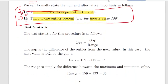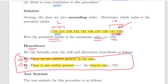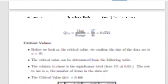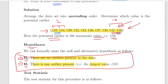The test statistic for this procedure is Q_TS equals gap divided by range. The gap is the difference between the potential outlier and the next value. In this case the next value is 142, so the gap is 17. The minimum value is 123, so the range is 36 — the difference between the maximum and minimum. Therefore the test statistic is 17 divided by 36, which equals 0.4722. We should confirm the sample size is n equals 10, which can be verified by counting the values.